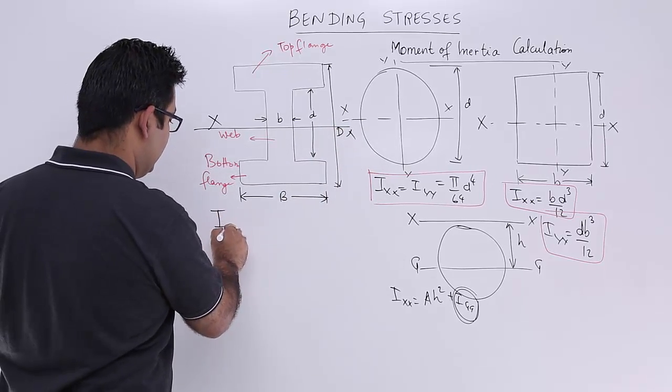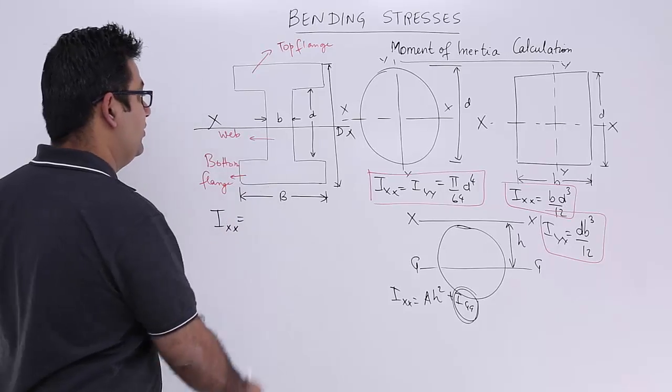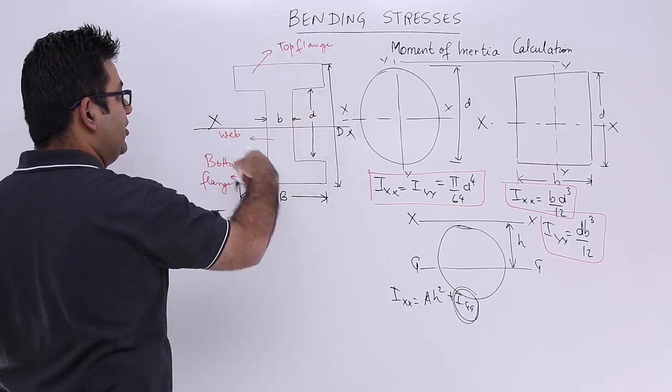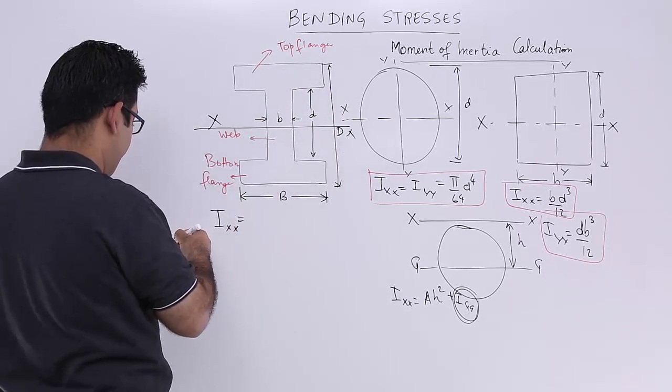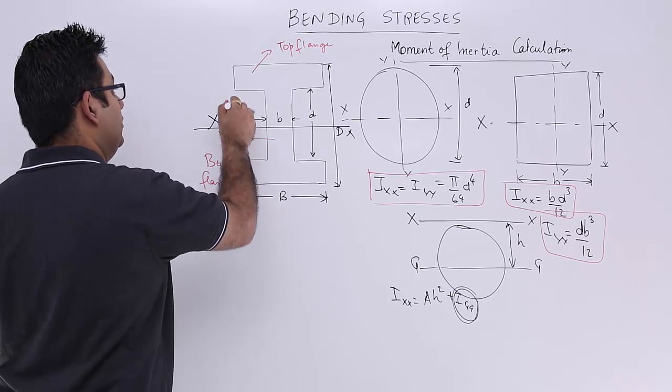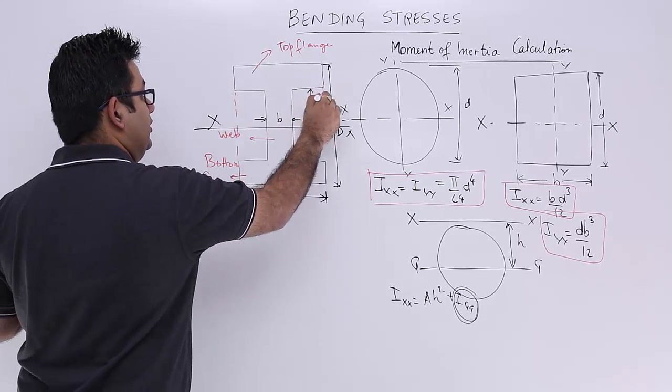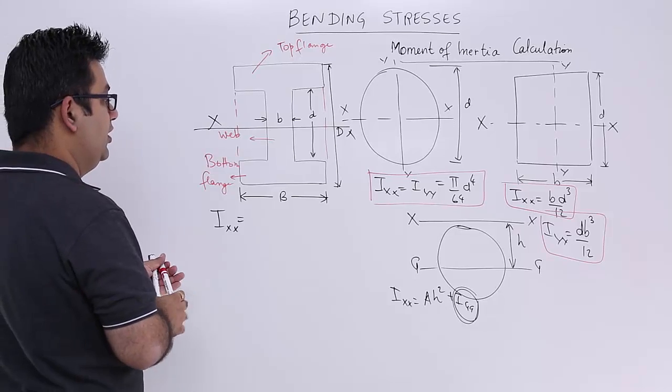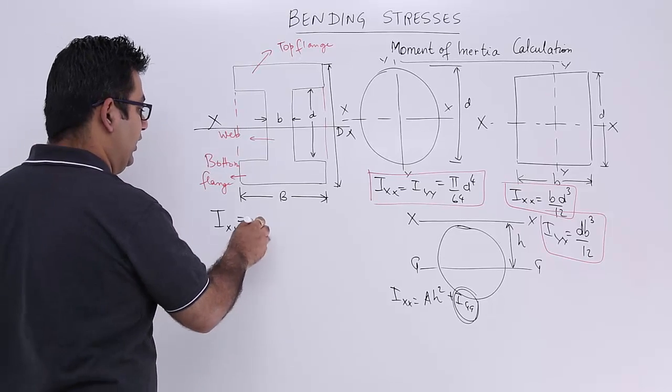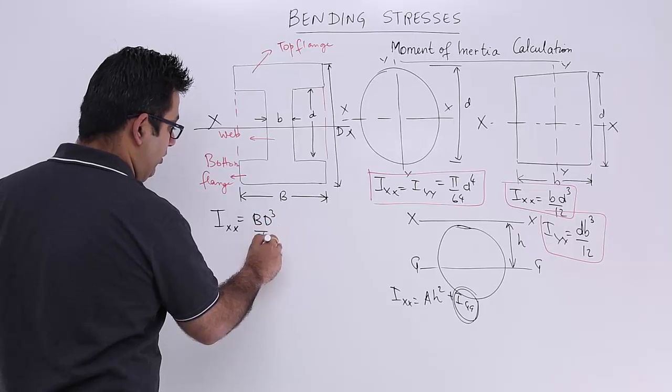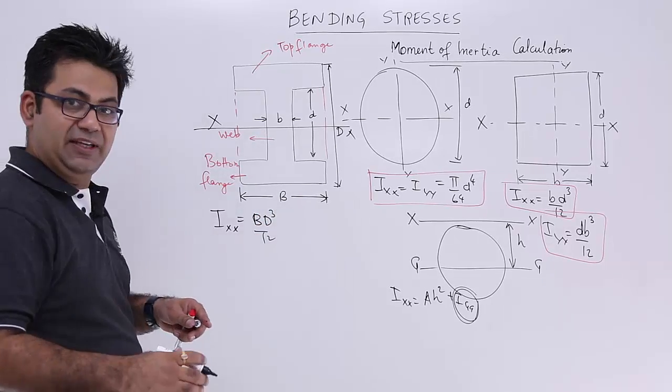So Ixx is equal to - let us assume this to be a complete rectangle. This would be equal to capital B into capital D cube upon 12. But from this, we are taking out this moment of inertia and this moment of inertia.